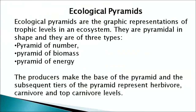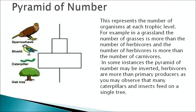Energy flow through an ecosystem can be represented graphically as ecological pyramids, which are graphic representations of the trophic levels of an ecosystem. They are pyramidal in shape and of three types: pyramid of number, pyramid of biomass and pyramid of energy. Producers form the base and subsequent tiers represent herbivores, carnivores and top carnivores. The pyramid of number represents the number of organisms at each trophic level. In a grassland, the number of grasses is more than herbivores, and herbivores more than carnivores. In some instances, the pyramid may be inverted — for example, many caterpillars and insects feed on a single tree.